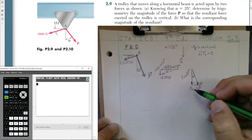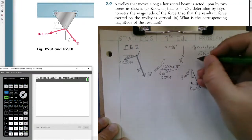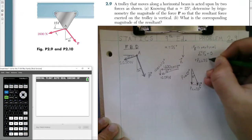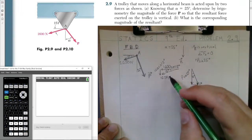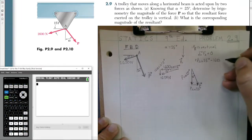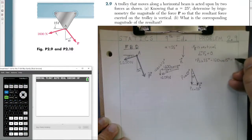So summing forces in the x direction, our P vector is going to the right. We'll take that as being positive for P. So positive P sine of 25 degrees. Our 1600 newtons vector is acting to the left. We'll take that as being negative. So we'll have a minus 1600 times this horizontal component of cosine 15 degrees. And again, these forces are summing to be equal to zero.